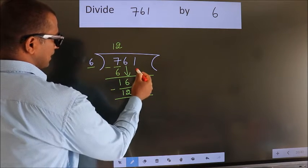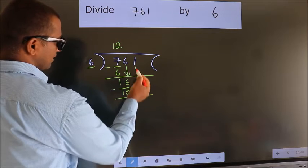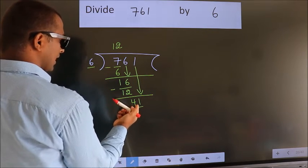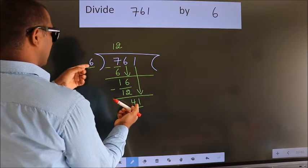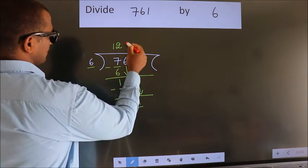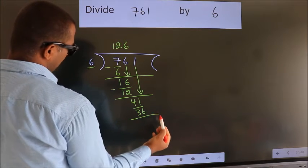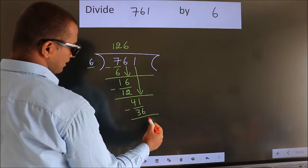After this, bring down the beside number. So 1 down. So 41. A number close to 41 in 6 table is 6, 6, 36. Now we subtract. We get 5.